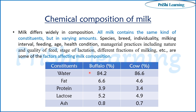I have given the buffalo and cow composition. In buffalo, water is 84.2% and in cow it is 86.6%. Buffalo milk has less water and more fat compared to cow milk. The protein in buffalo is higher, lactose is 4.9%, and ash is 0.7% in both.